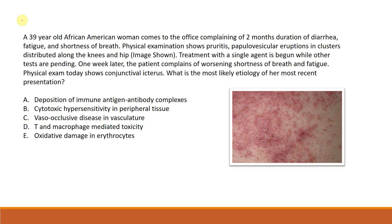A 39-year-old African-American woman comes to the office complaining of two months duration of diarrhea, fatigue, and shortness of breath. This is very important: always take note of the first sentence of any question stem because it usually tells you the patient's presenting symptoms. See what's important and what pops out at you.